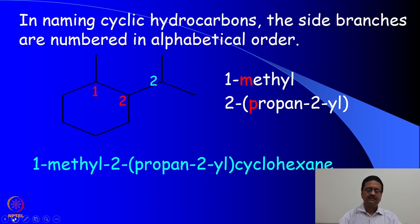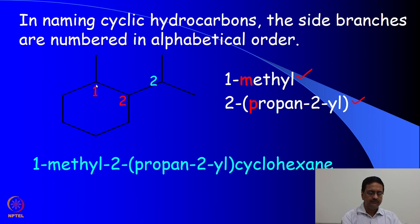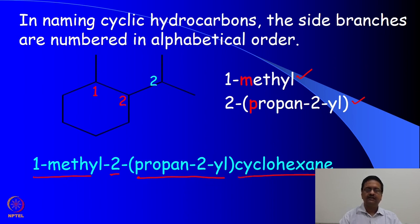When naming cyclic hydrocarbons, the side branches are numbered in alphabetical order. Here we have two substitutions: a methyl substitution and a propan-2-yl substitution. While numbering, we give methyl the first priority because 'm' comes before 'p'. So methyl is at position 1, and at position 2 we have propan-2-yl because it is a 3-membered ring connected at the middle. We write it as 1-methyl-2-propan-2-yl-cyclohexane.